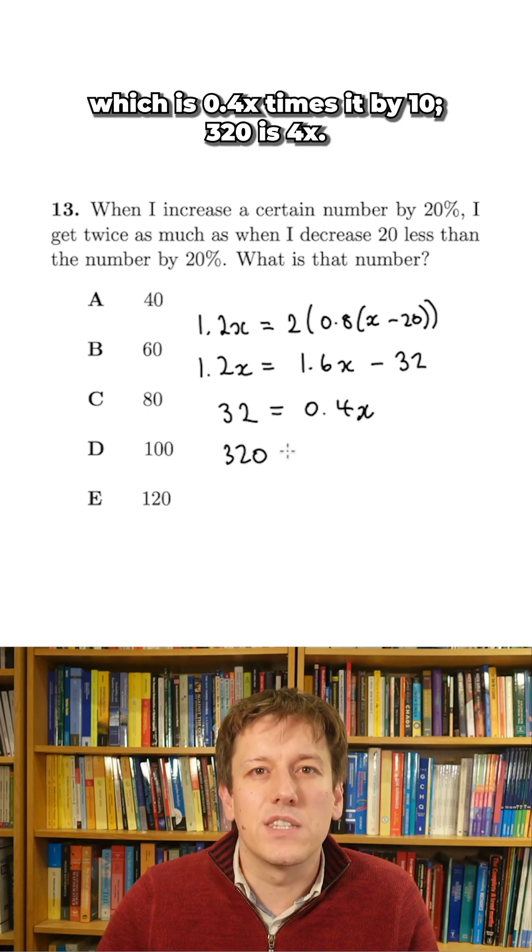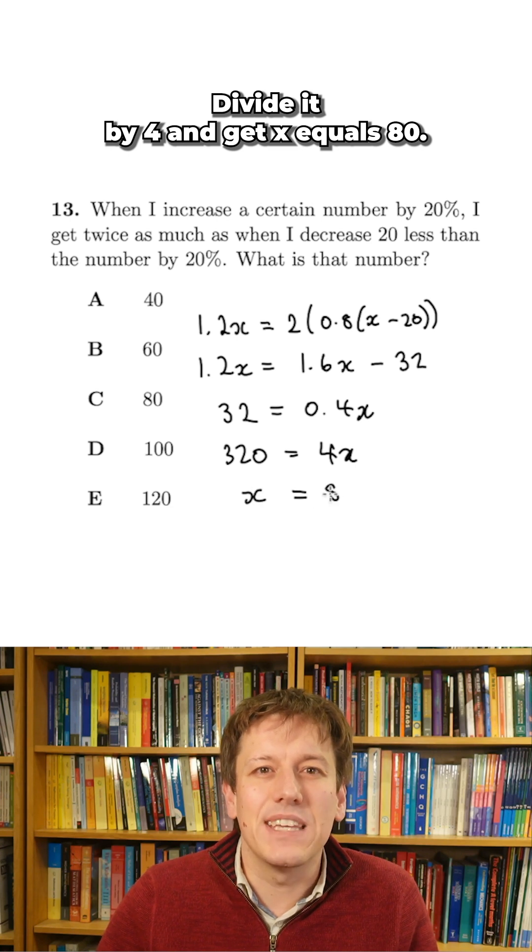Times it by 10. 320 is 4x. Divide by 4 and get x equals 80. And we're done.